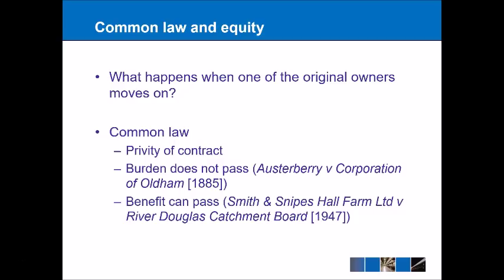In common law, we have the idea of privity of contract — in other words, if I make a contract with another person, then that contract is just between me and that person. So if someone else who takes over the land gets involved, the basic idea is that they should not be bound by a contract I made with another person. So the burden generally does not pass in common law — we can look at the case of Austerberry v Corporation of Oldham for that. However, the benefit can generally pass in common law, and the case for this is Smith and Snipes Hall Farm Ltd v River Douglas Catchment Board (1947).